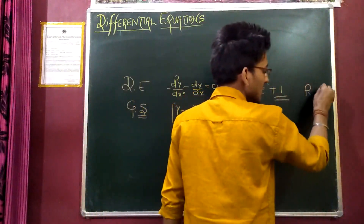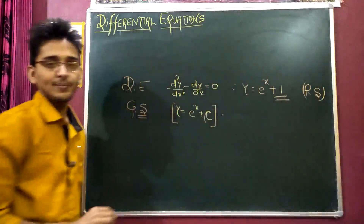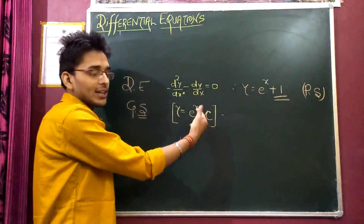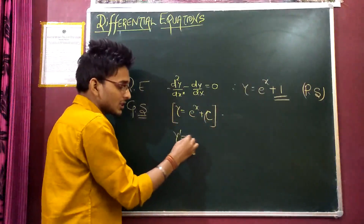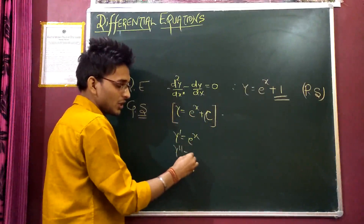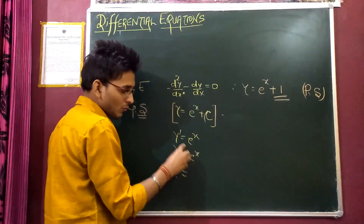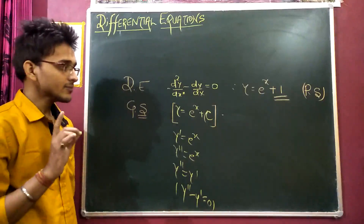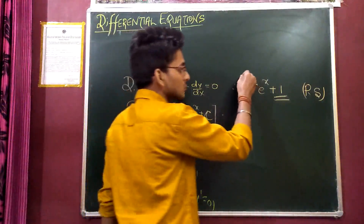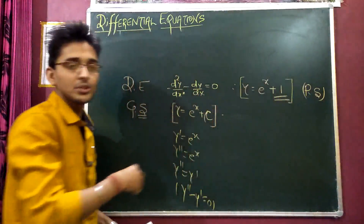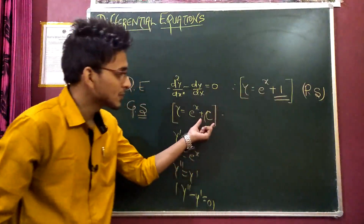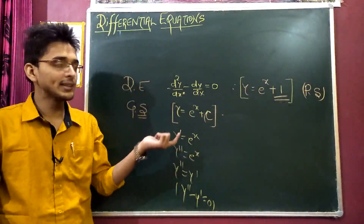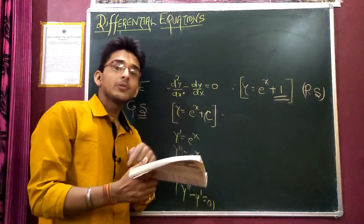This is called the particular solution. If y = e^x, then dy/dx = e^x, and d²y/dx² = e^x, so dy/dx minus d²y/dx² equals zero — you get the result. So if you take a general solution and assign a specific value to the arbitrary constant, that gives you a particular solution.